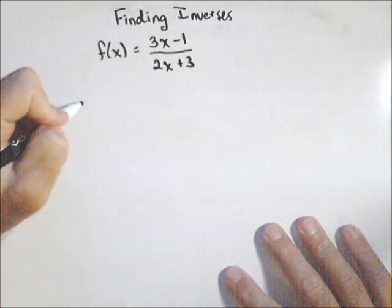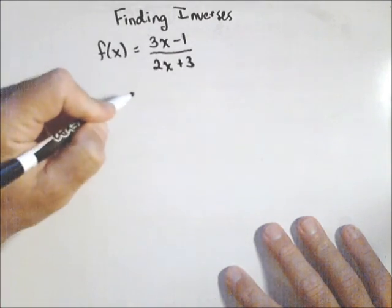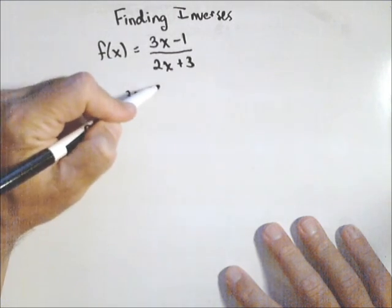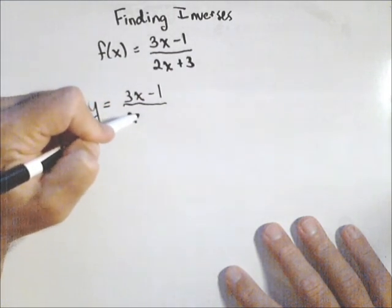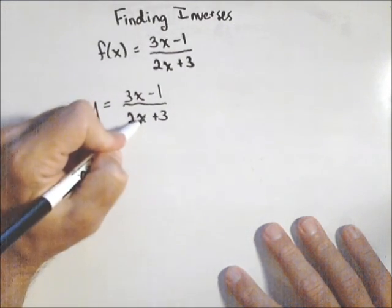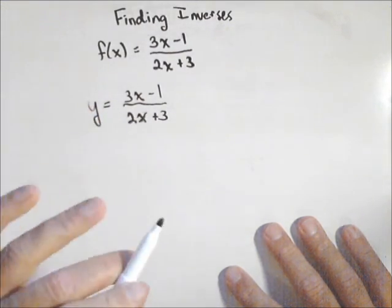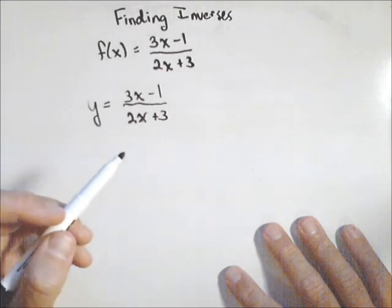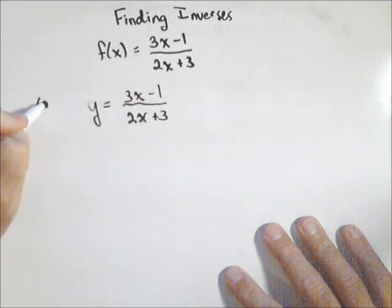First, I'm going to write f(x) = y = (3x-1)/(2x+3). A lot of times you'll hear swap the variables and solve for y. I don't teach that. I just say solve for the input variable. So I'm going to solve for x. That's my goal.